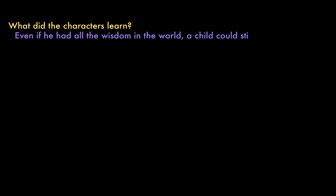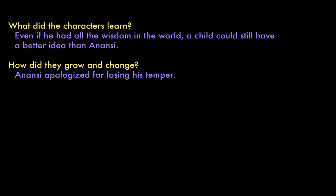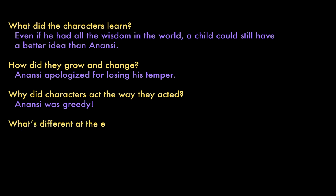So, our questions checklist. What did the characters learn? Well, Anansi learned that even if he had all the wisdom in the world, a child could still have a better idea than him. How did the characters grow and change? Anansi apologized for losing his temper and realized that he wasn't the only person with good ideas. Why did characters act the way they acted? I think Anansi was greedy. Why else would he want to have all the wisdom in the world and not share it with anybody else?